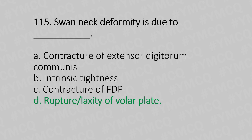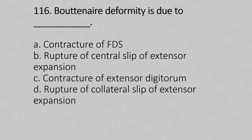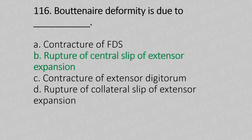Question number 116: Boutonniere deformity is due to dash — Option A: contracture of FDS (flexor digitorum superficialis), Option B: rupture of the central slip of extensor expansion, Option C: contracture of extensor digitorum, Option D: rupture of the collateral slip of extensor expansion. The answer is Option B, rupture of the central slip of extensor expansion.